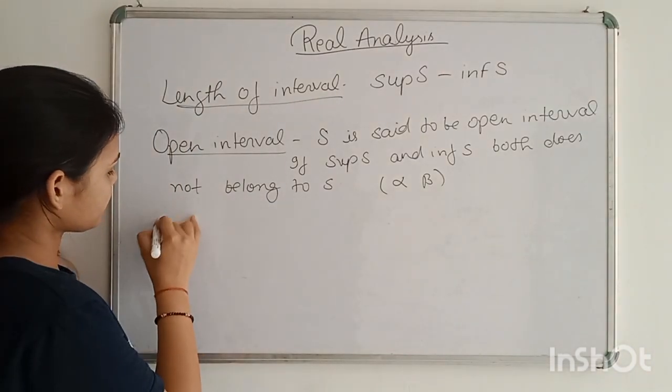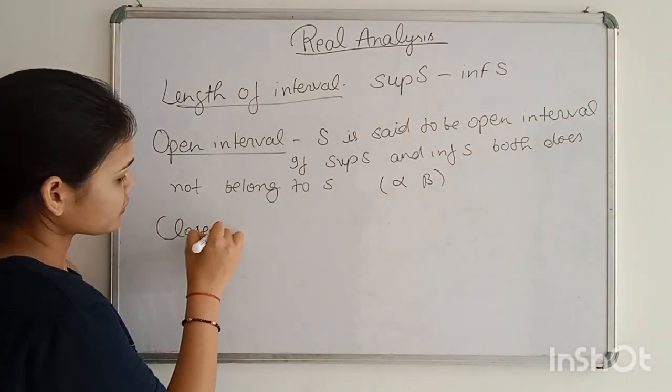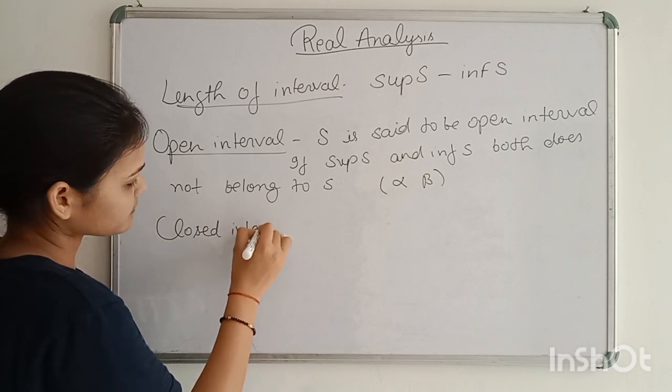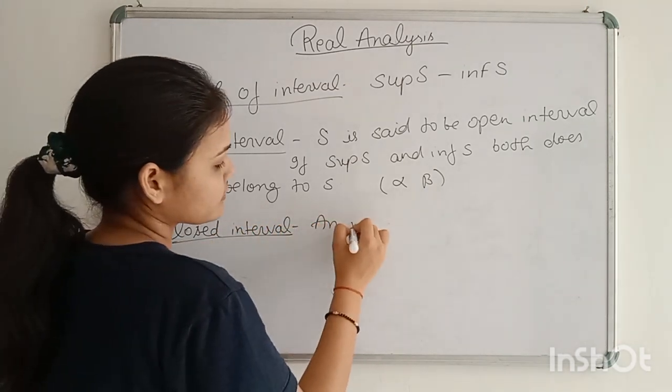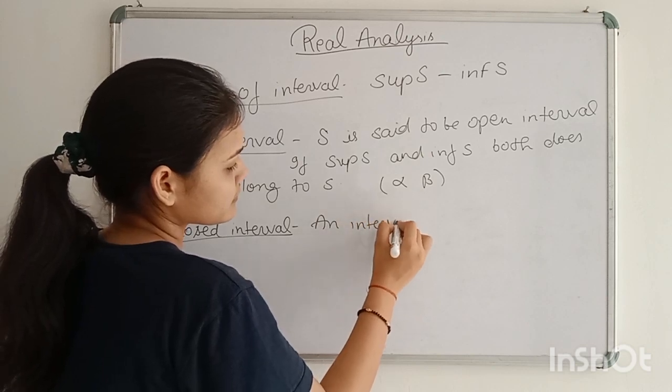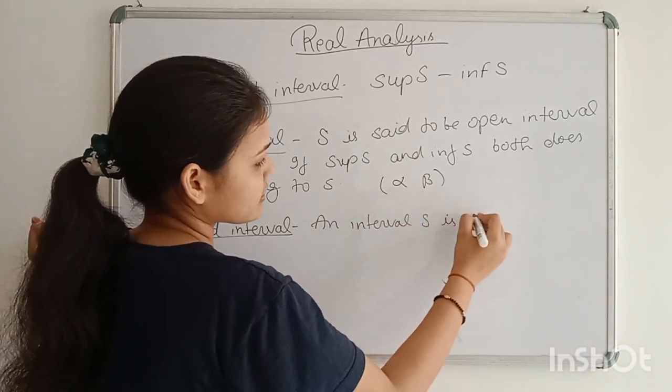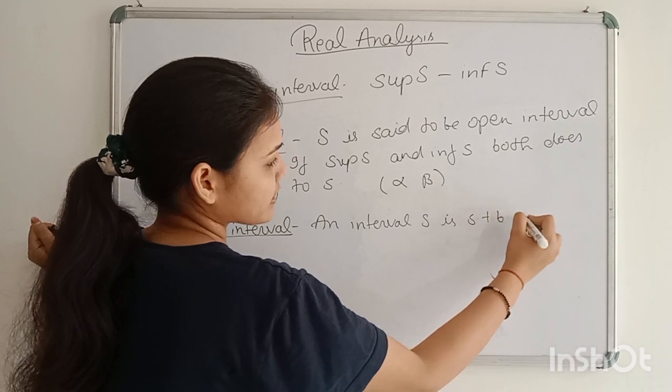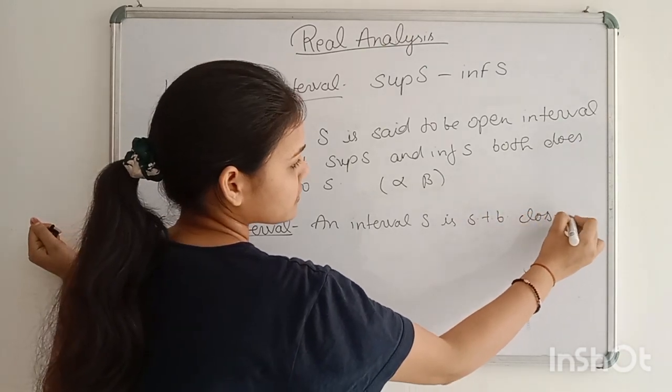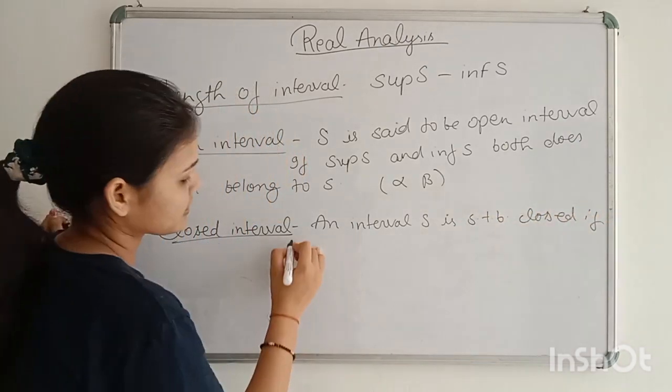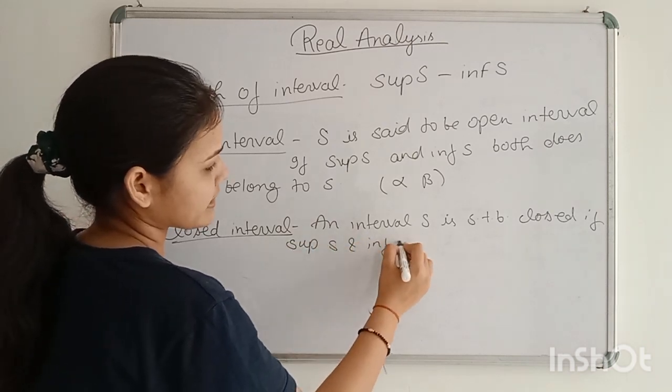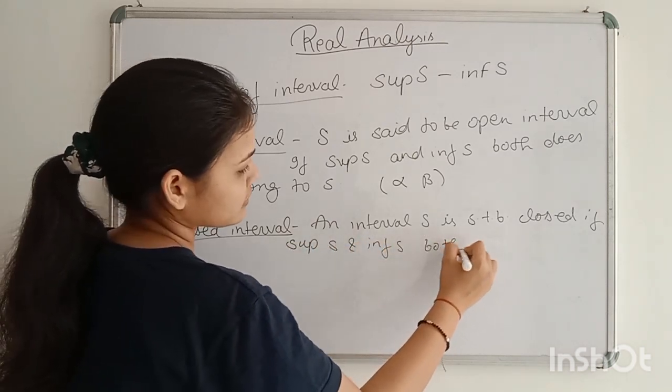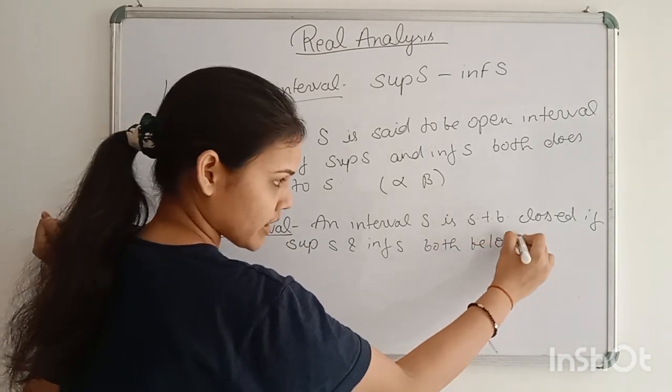Next, what is closed interval? S is said to be closed interval if supremum of S and infimum of S both belong to S.